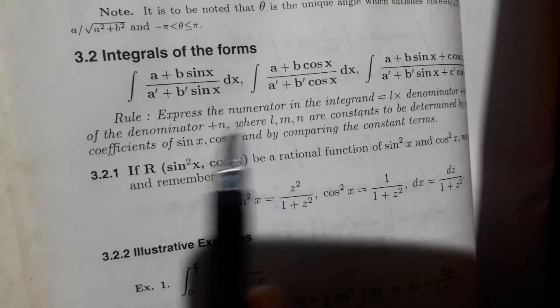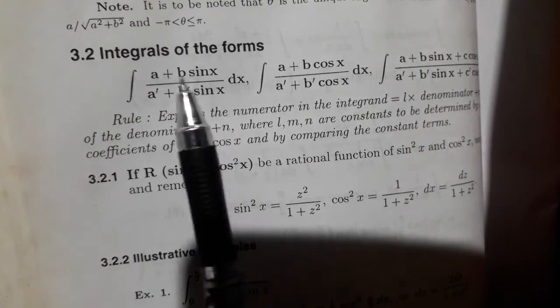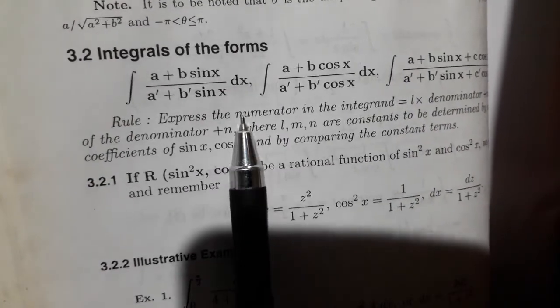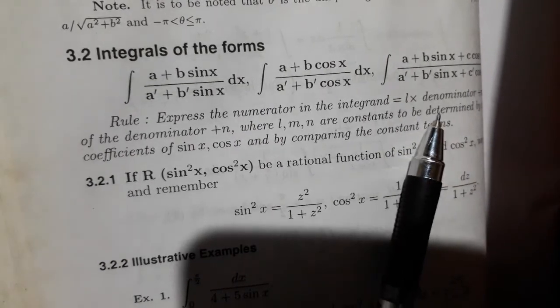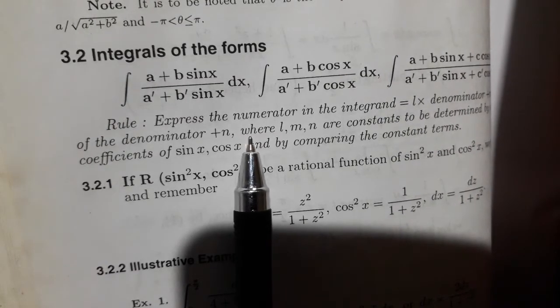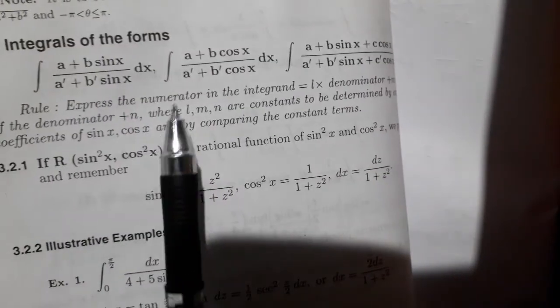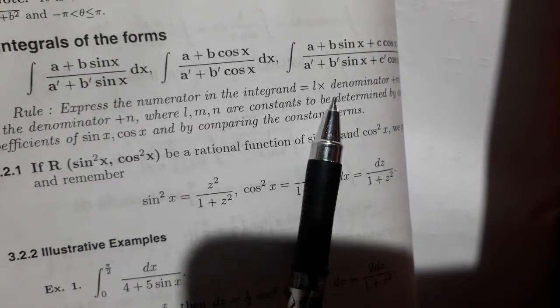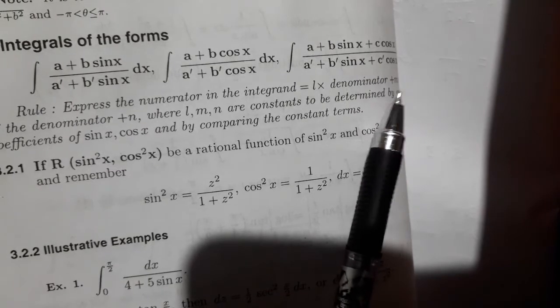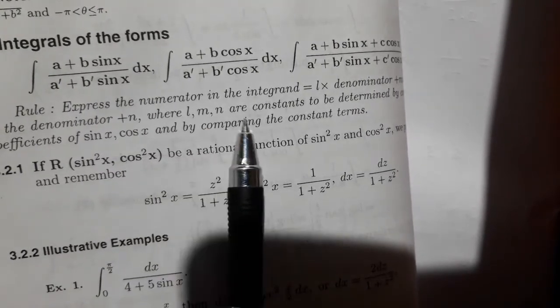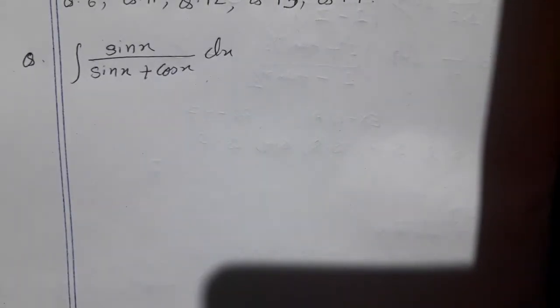We're going to solve this equation: integration of sin(x) divided by sin(x) plus cos(x) dx. This integration is of a specific form. Any integration following this form requires us to take the numerator equal to a constant L into the denominator, plus another constant M into the differentiation of the denominator, plus another constant N.